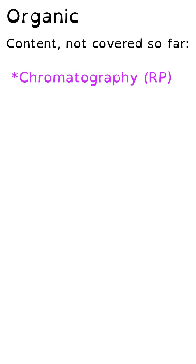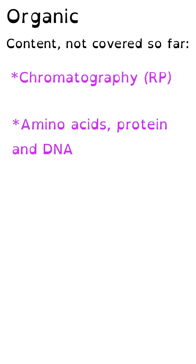There are normally six questions in section A of paper 3. For organic chemistry topics, I think it's highly likely that chromatography will come up — there's a required practical on this topic and there have been no marks so far. Additionally, there haven't been any marks about amino acids, proteins and DNA, or polymers. I suspect there could be two organic chemistry questions, perhaps one about chromatography and either amino acids or polymers.